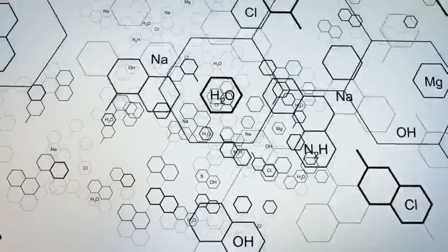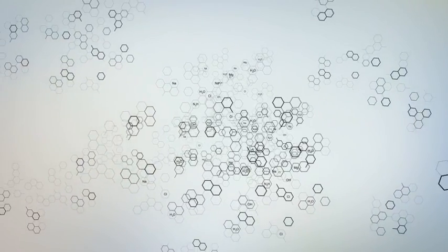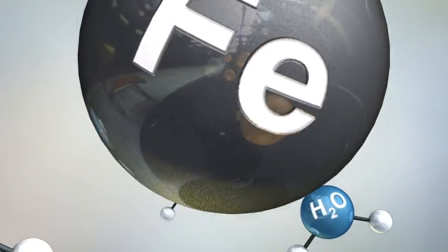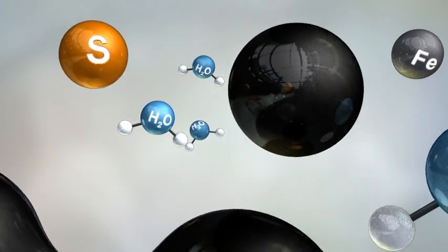The iron in a formation is usually a corrosion byproduct, but also can be naturally occurring. The sulfur in the formation is usually the result of sulfur-reducing bacteria, but sulfur also can be naturally occurring.